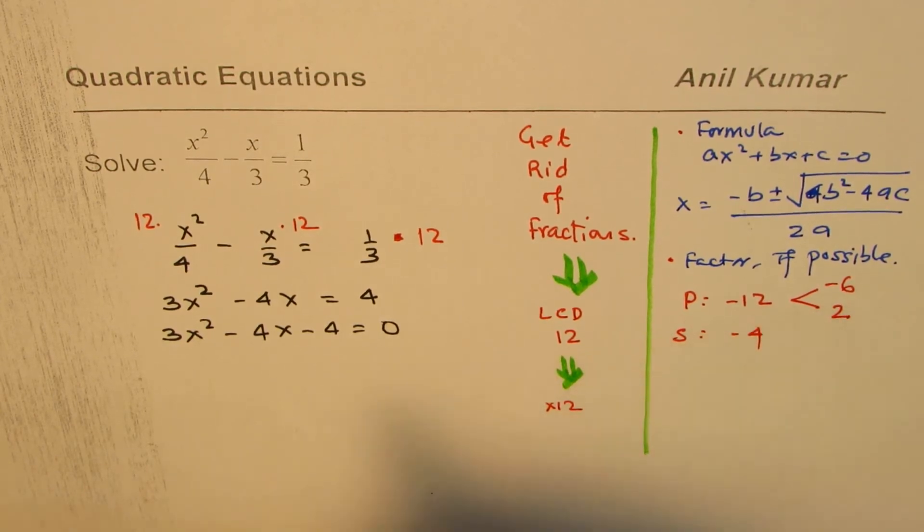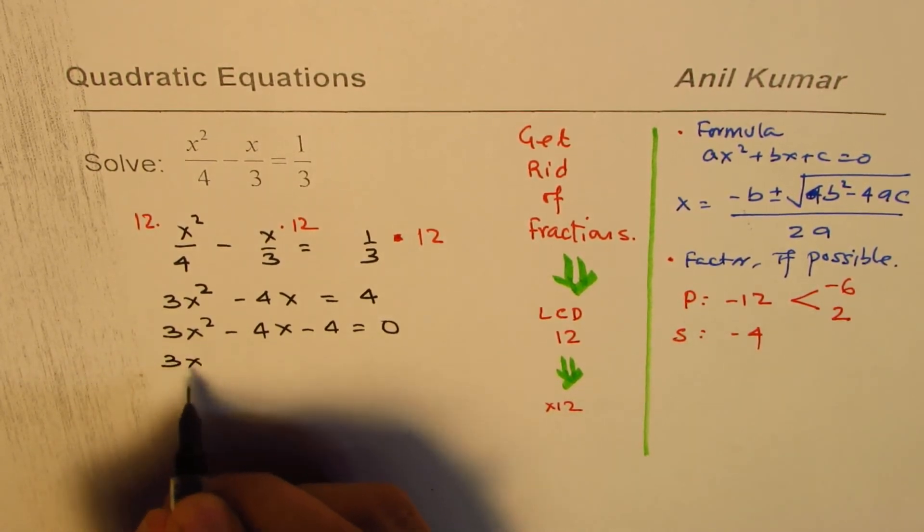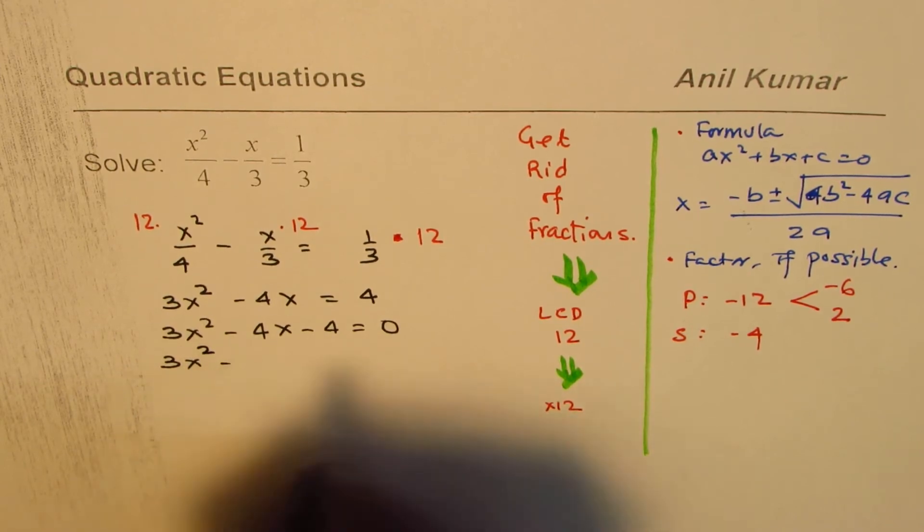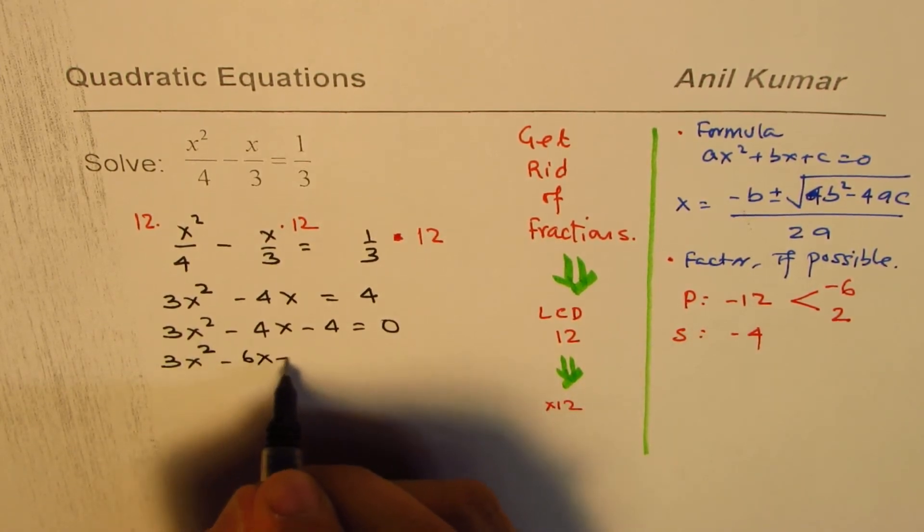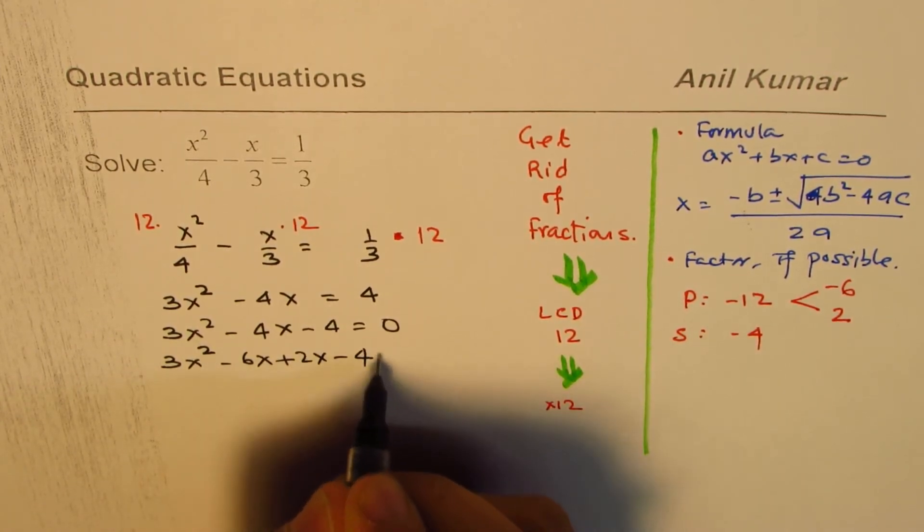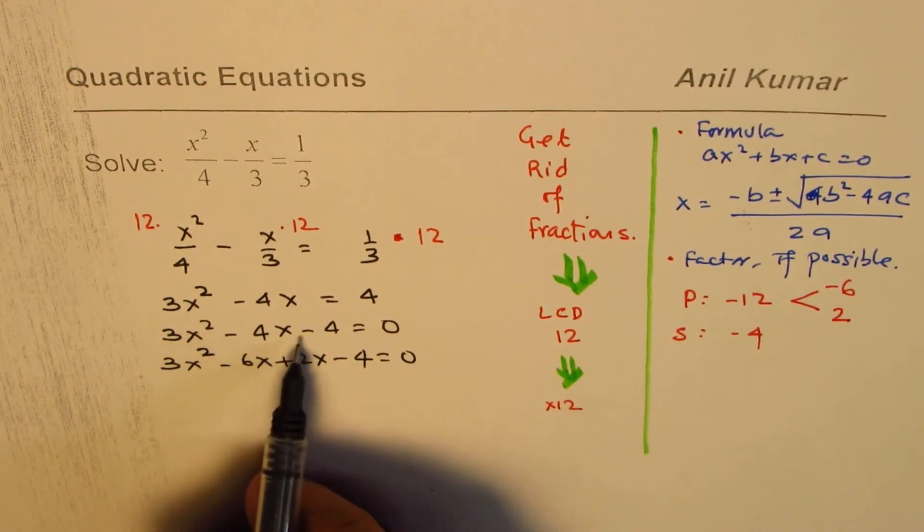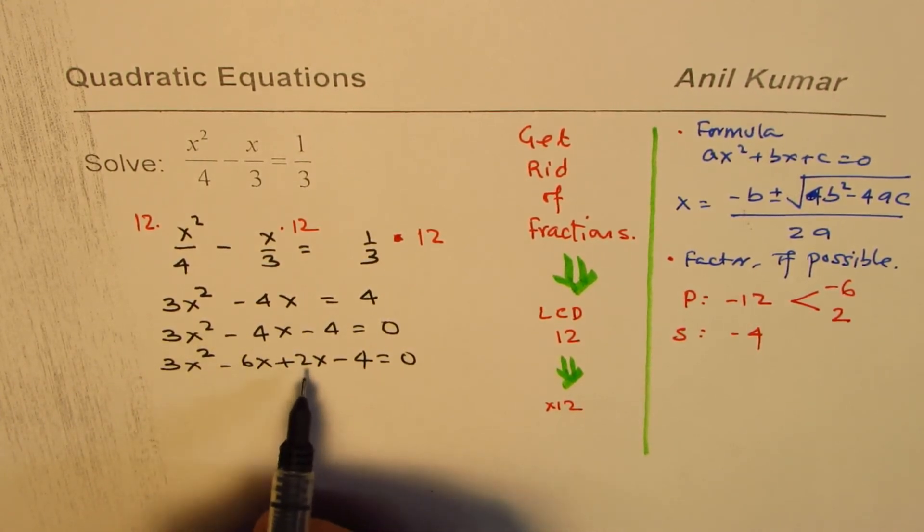I hope the strategy is clear. So we are using this factoring technique, product and sum. Minus 6x plus 2x minus 4 equals 0. So we have split this minus 4x as minus 6x plus 2x.